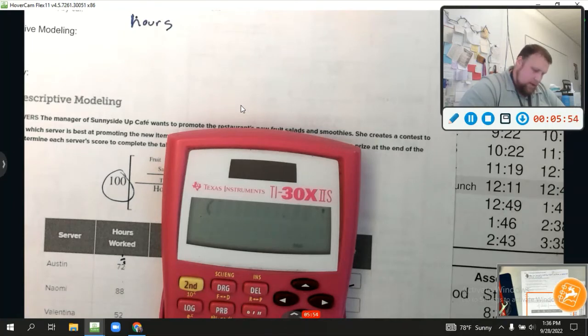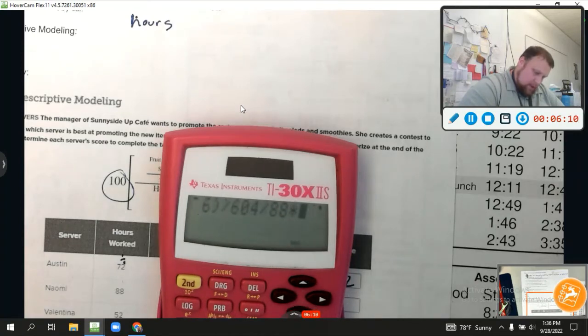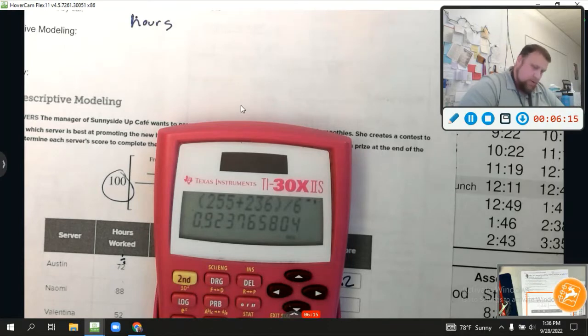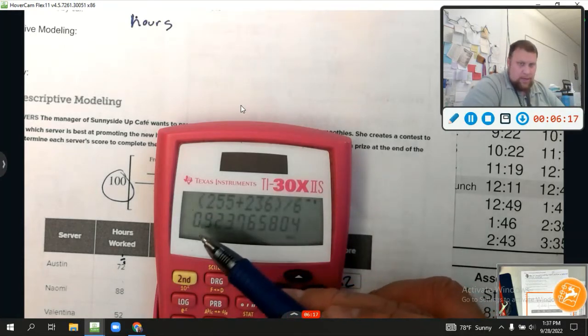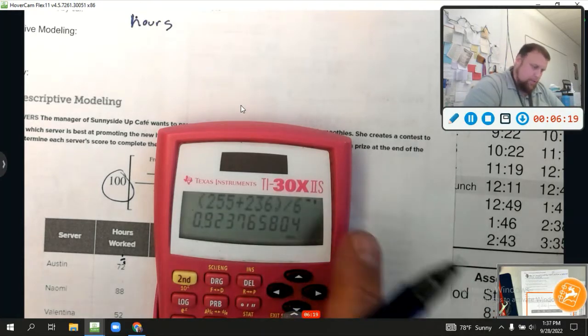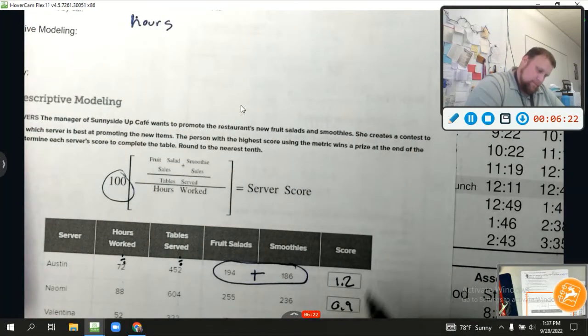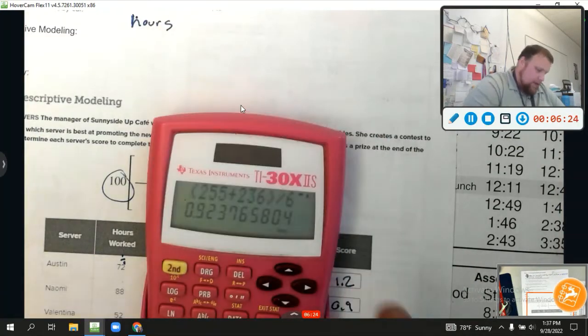And last we got Valentina. So right now Austin's the person to beat, but let's see Valentina. We're going to have, parentheses, 38 smoothies plus 177 fruit salads divided by 322 tables served divided by 52. And times 100, right? Look at that. That 8 tells me to round the 2 up to a 3, so it's going to be 1.3 is the score. So Valentina is our winner.